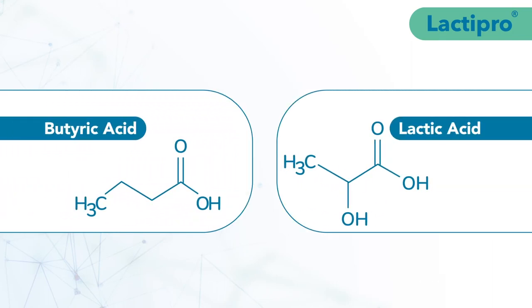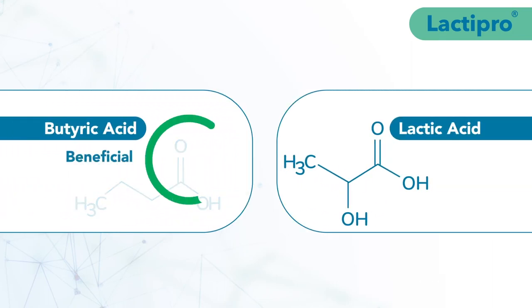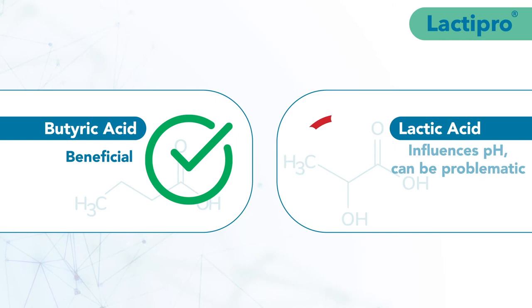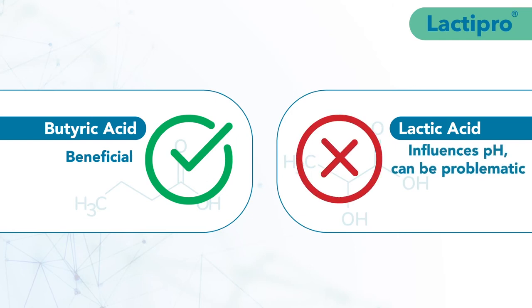Two rumen acids play key roles in rumen health. Butyric acid is beneficial, while lactic acid is the primary influencer of ruminal pH and can be problematic.